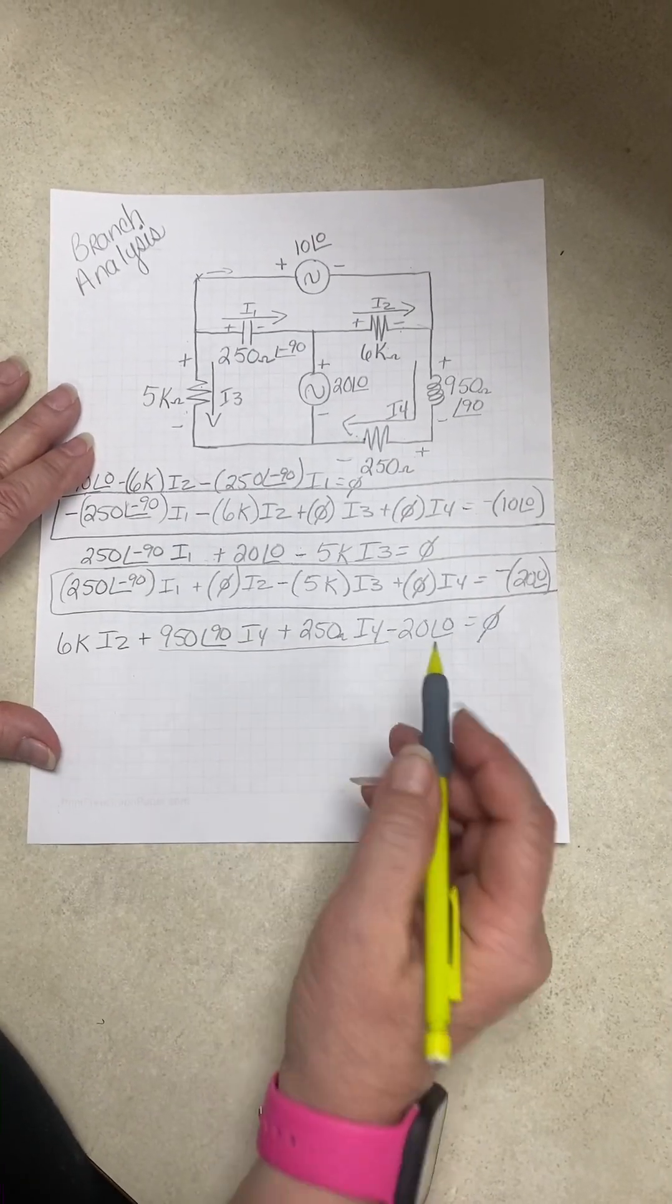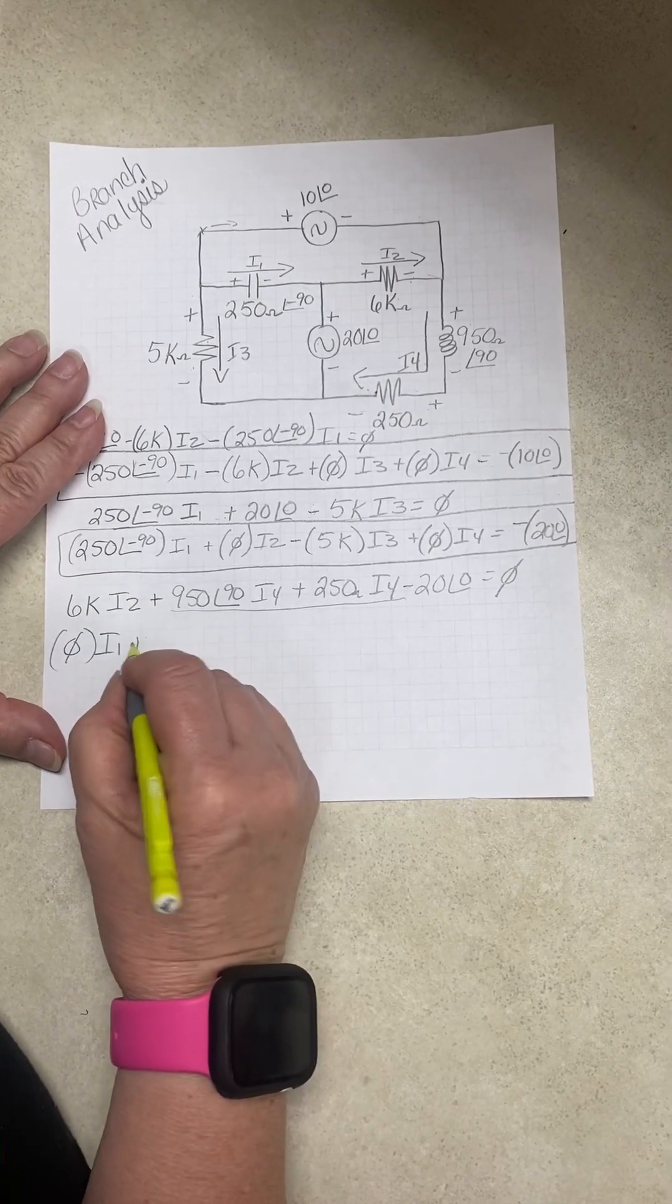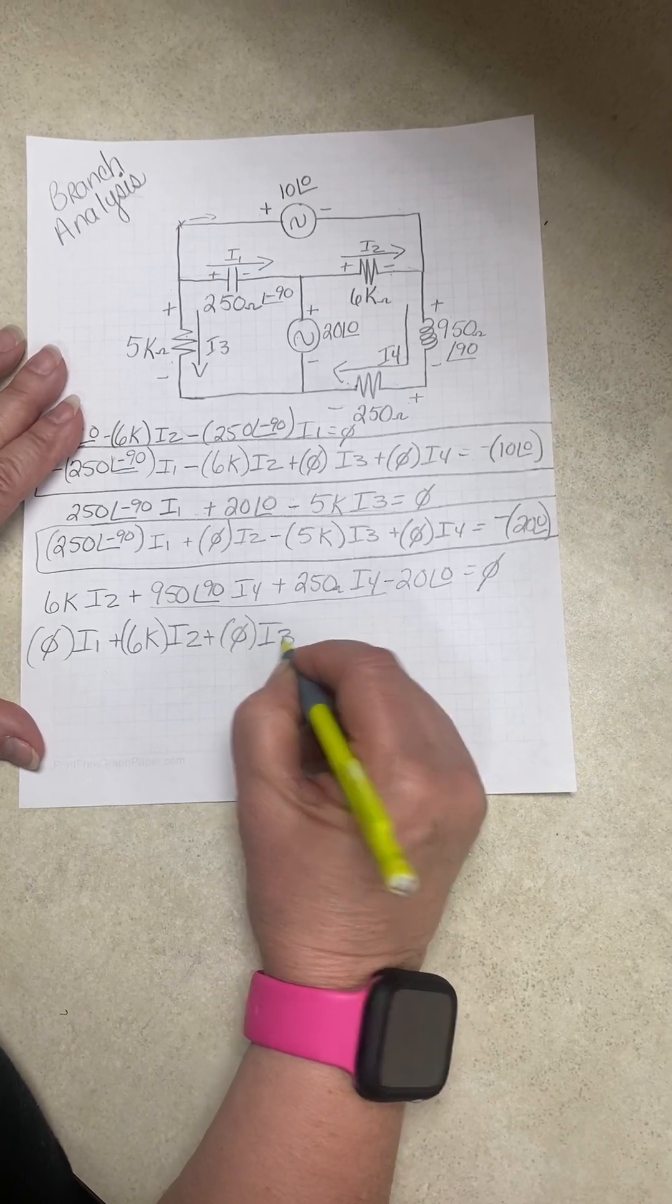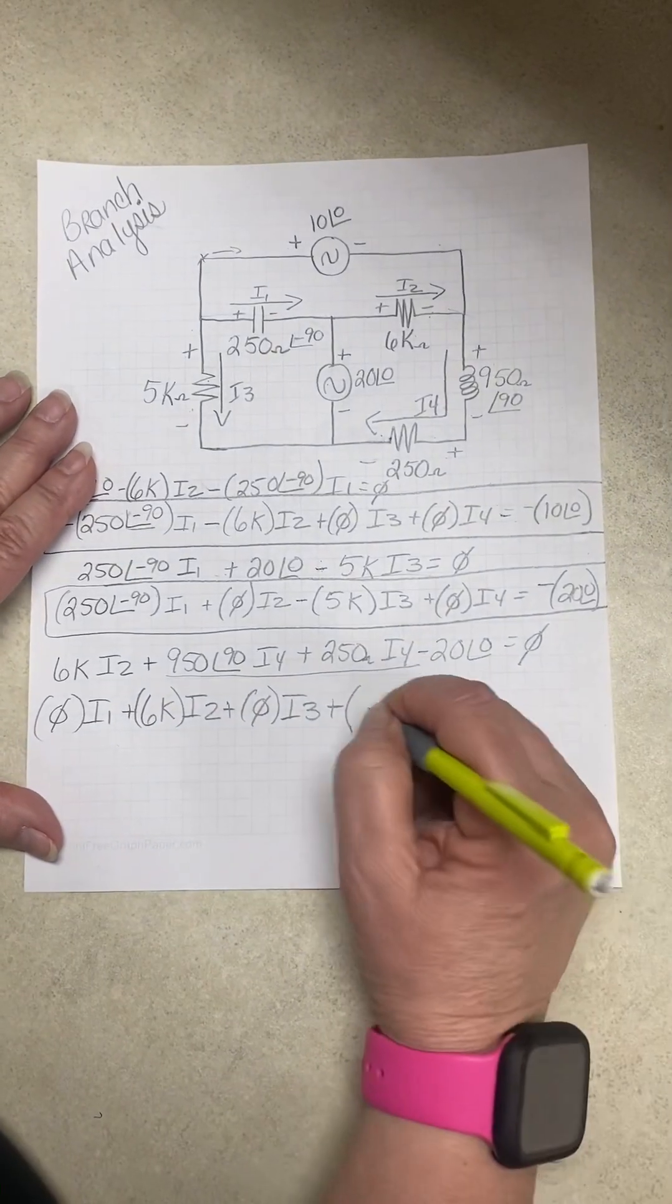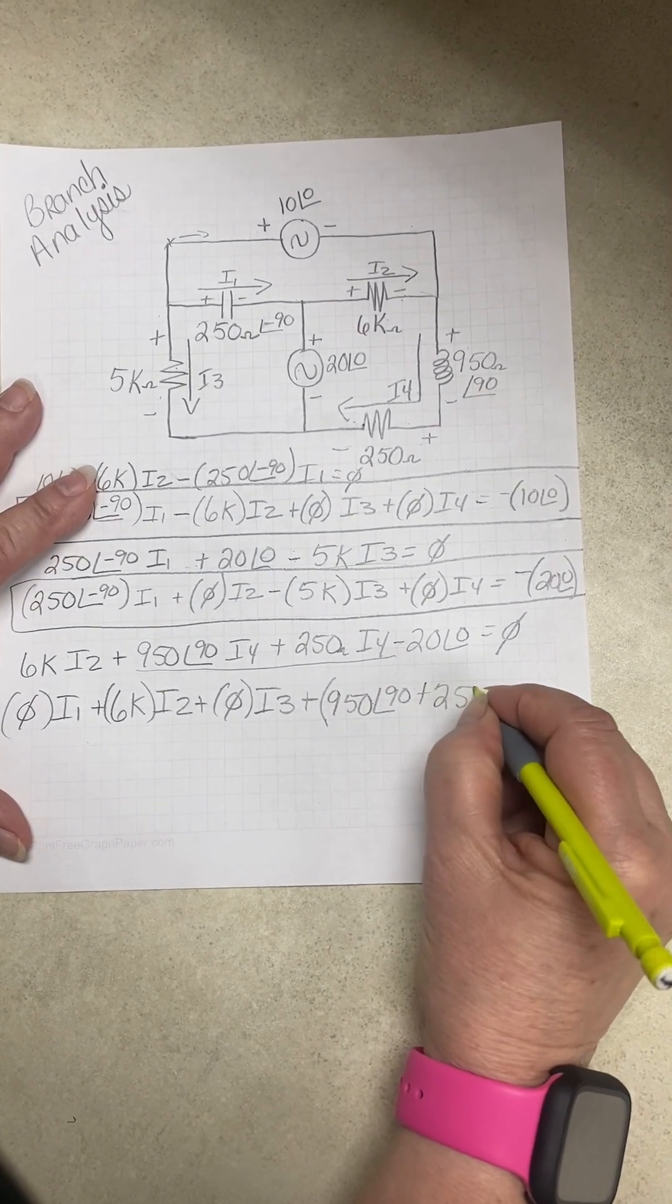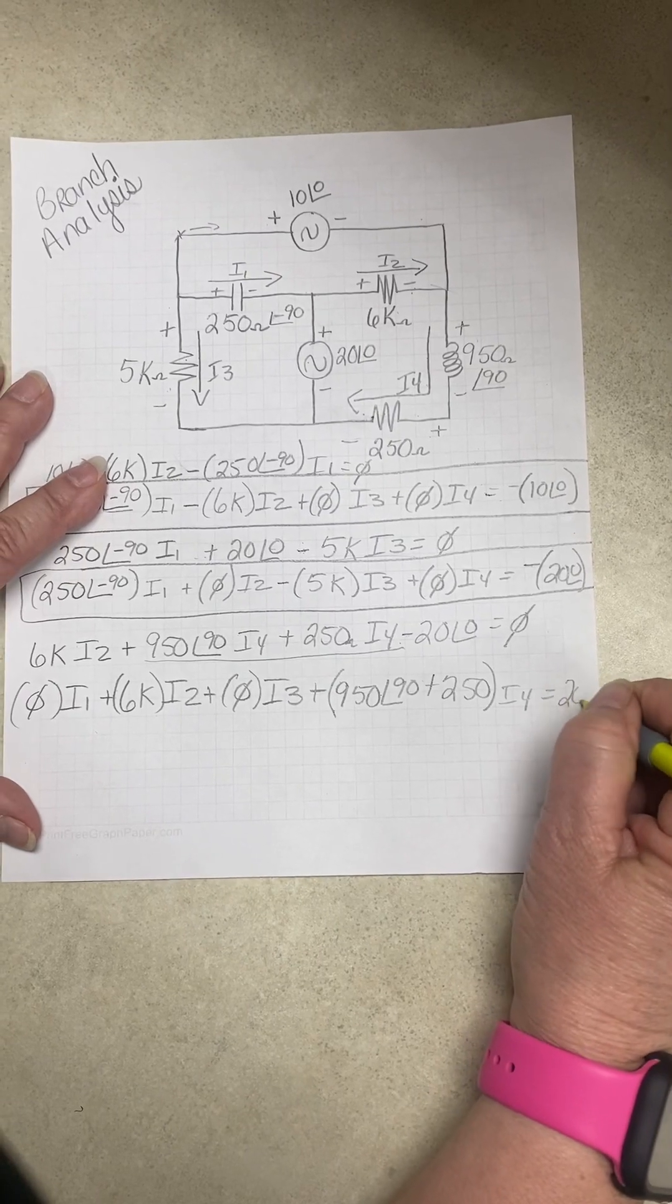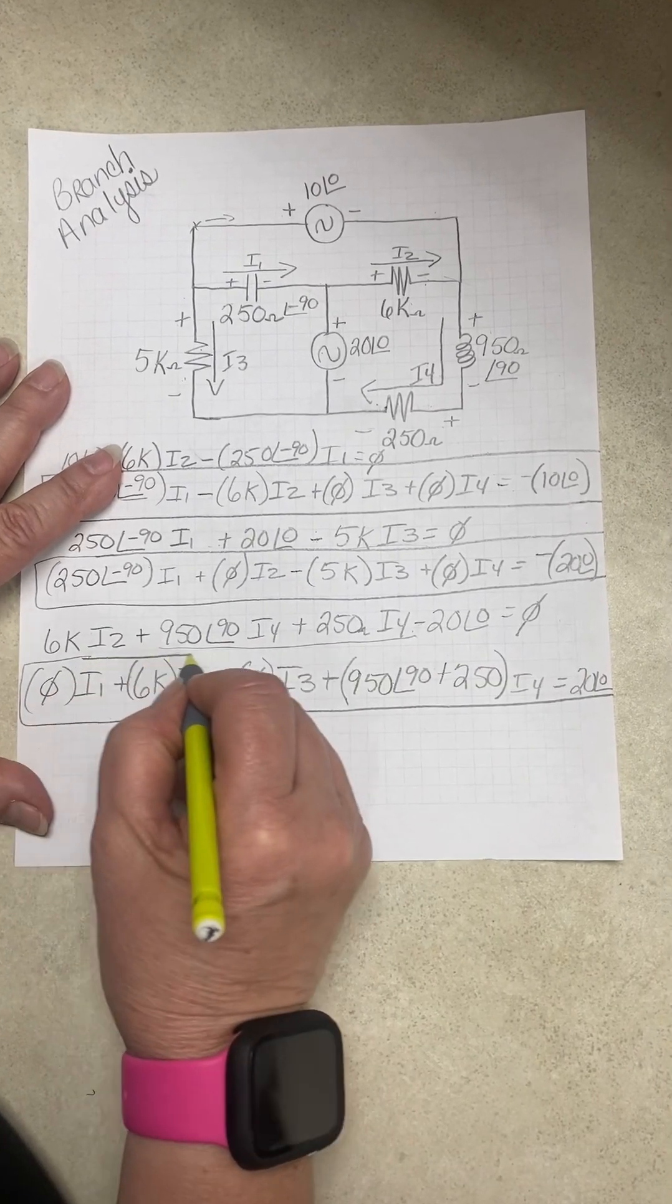We have I2 and I4, so we're going to have zero I1 plus 6K I2 plus 0 I3 plus, because there's two terms, we're just going to put both of them in parentheses, 950 at an angle of 90 plus 250, I4 equals, this negative 20 has to go to this side, so it's 20 at zero. That's our third equation.